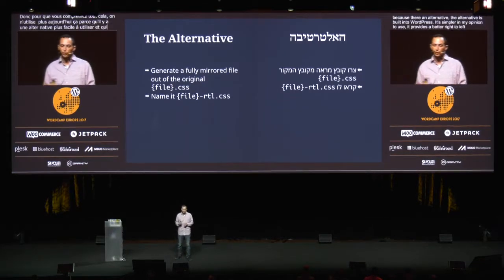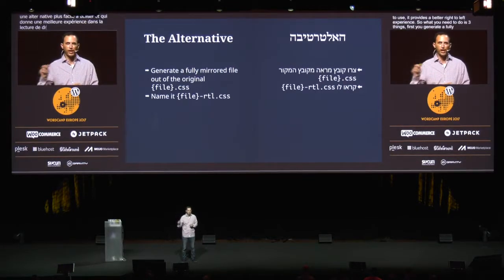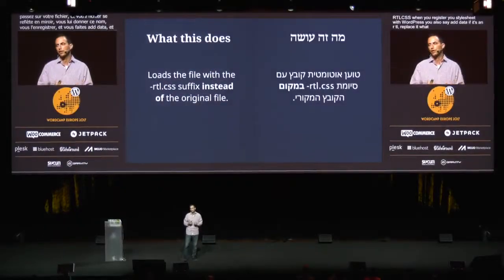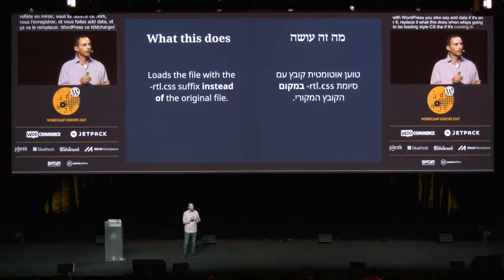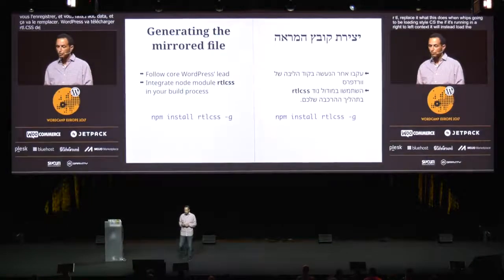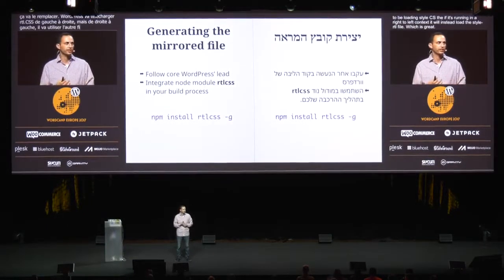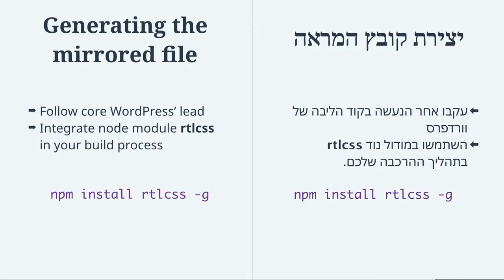What you need to do is three things. First, you generate a fully mirrored CSS file. So let's say you have style.css — you run it through something and then you get a mirrored CSS file. You name that file style-rtl.css. Then when you register your stylesheet with WordPress, you also say add_data, and if it's an RTL version, replace it. What this does is: when WordPress loads style.css and it is running in a right-to-left context, it instead loads the style-rtl file. So how do you create that mirrored CSS file? You follow what WordPress core does — it integrates a Node module called RTLCSS. It's easy to install locally, or you can go to rtlcss.com for all the details.